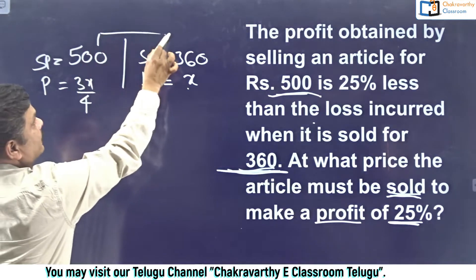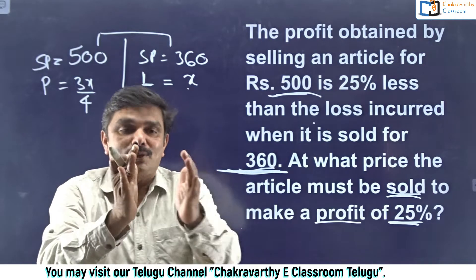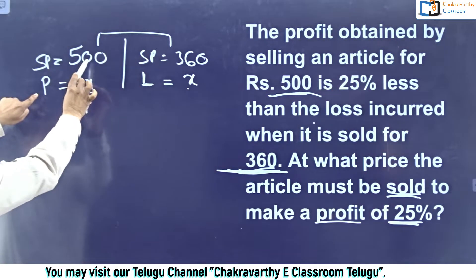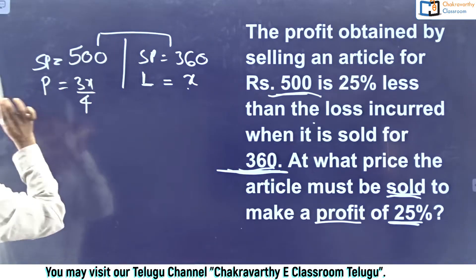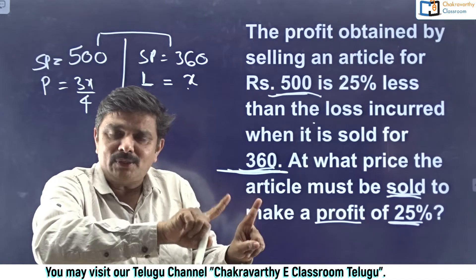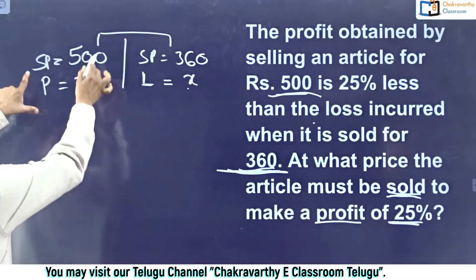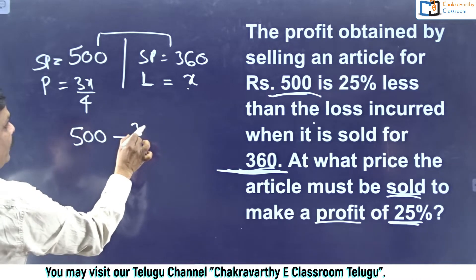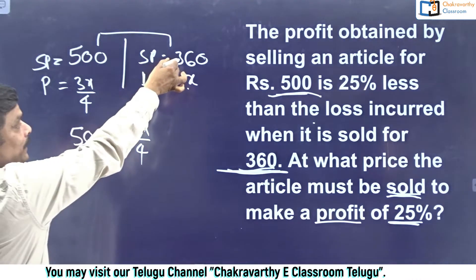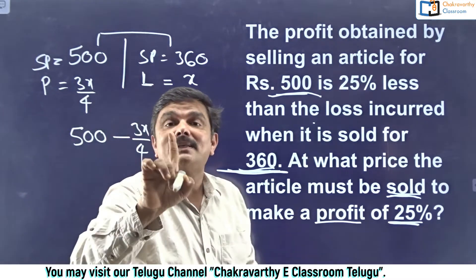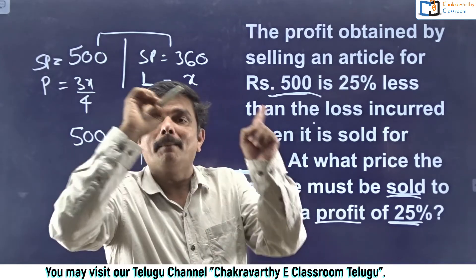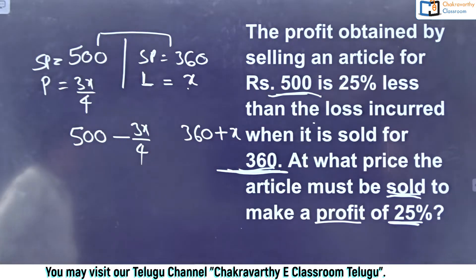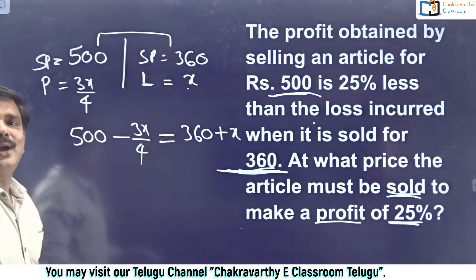In both cases, the cost price is the same. I'm going to frame an equation using that. Selling price minus profit gives the cost price. So cost price = 500 minus 3x/4. Also, selling price plus loss gives the cost price. So cost price = 360 plus x. Since both cost prices are equal, I equalize these two expressions and find the value of x.